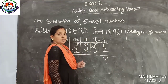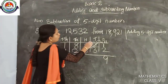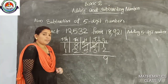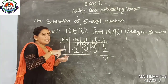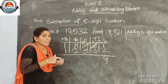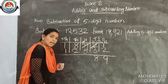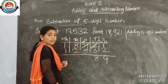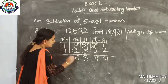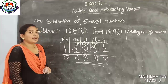Hundreds place is now 8. 8 minus 5 is possible — the answer is 3. Thousands place: 8 minus 2 is 6. Ten-thousands place: 1 minus 1 is 0. So the answer is 6,389.